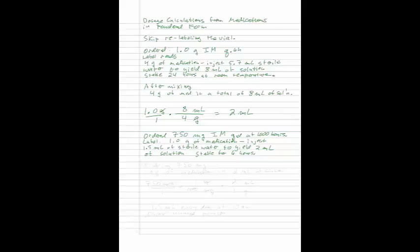Now we are going to say that this is stable for 6 hours. So what are we going to do here? We recognize that we are ordering 750 milligrams, but what we have is 1 gram of medication and 1.5 milliliters of medication to give us a total of 2 milliliters. So what we are ordering here is 750 milligrams. But after we mix, we have a total of 1.0 grams of medication in a total of 2 milliliters of solution. Once the water is added, we have a total of 2 milliliters of solution.